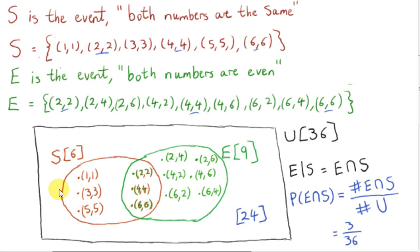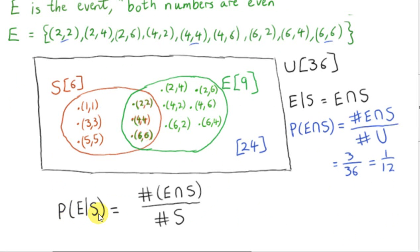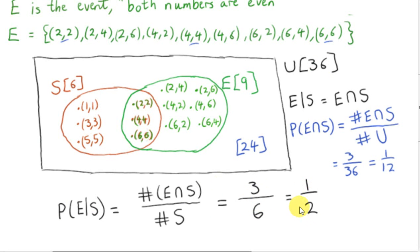We can imagine selecting one element at random from all 36 elements in the universal set. The probability that it comes from the intersection is 3 divided by 36. On the other hand, if we want the probability of event E given that S has occurred, we divide the number of elements in the intersection not by 36, but by the number of elements in set S. This only works if all the elements are equally likely. So we have 3 elements in the intersection and 6 elements in set S, giving us one half, as we saw before.